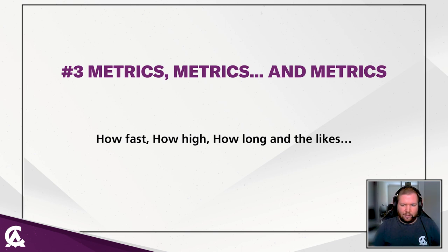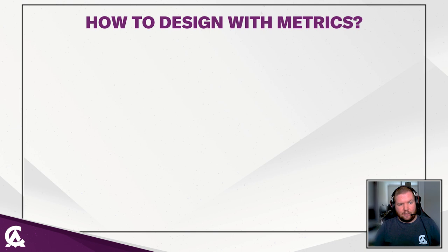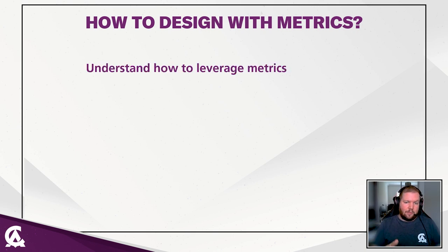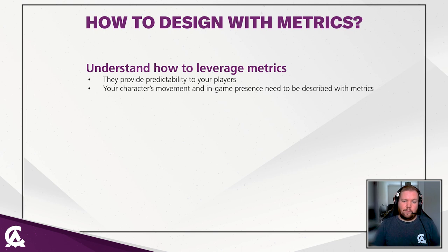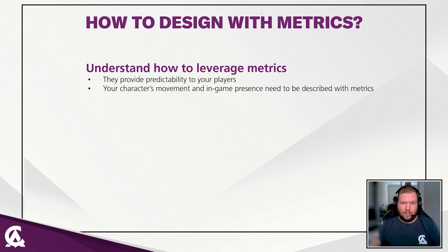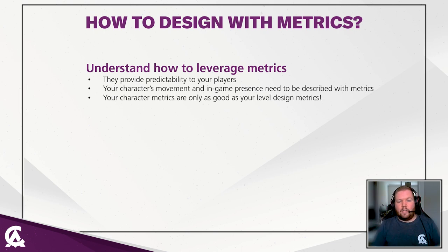Let's move on to my tip number three: metrics — and more metrics. This is basically how fast, how high, how long, and the like. The number one thing metrics do is provide predictability to your players. Your character movement and in-game presence need to be described with metrics. If you can mathematically describe the movement of your character, you are in a very good spot.